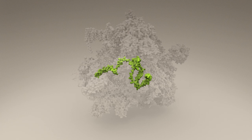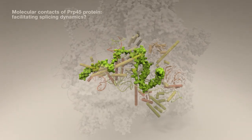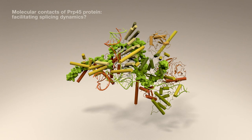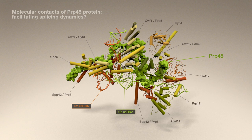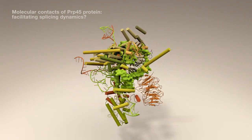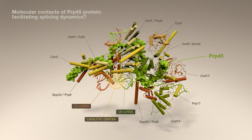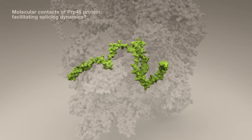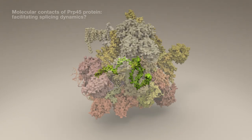Molecular contacts provide insight into how the spliceosome may assemble or reorganize during splicing. Consider PRP45 protein — it directly links spliceosomal RNAs and nine other proteins, appearing positioned to effectively propagate changes that may occur at the catalytic center to any distant corner of the spliceosome.